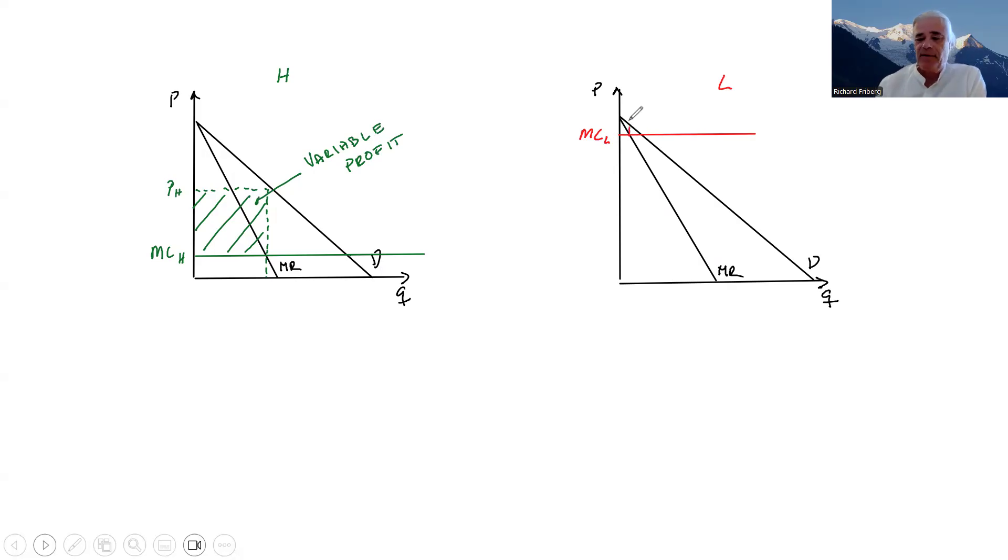It also sets quantity where marginal cost intersects with marginal revenue, and has PL, selling this quantity, and has this variable profit.